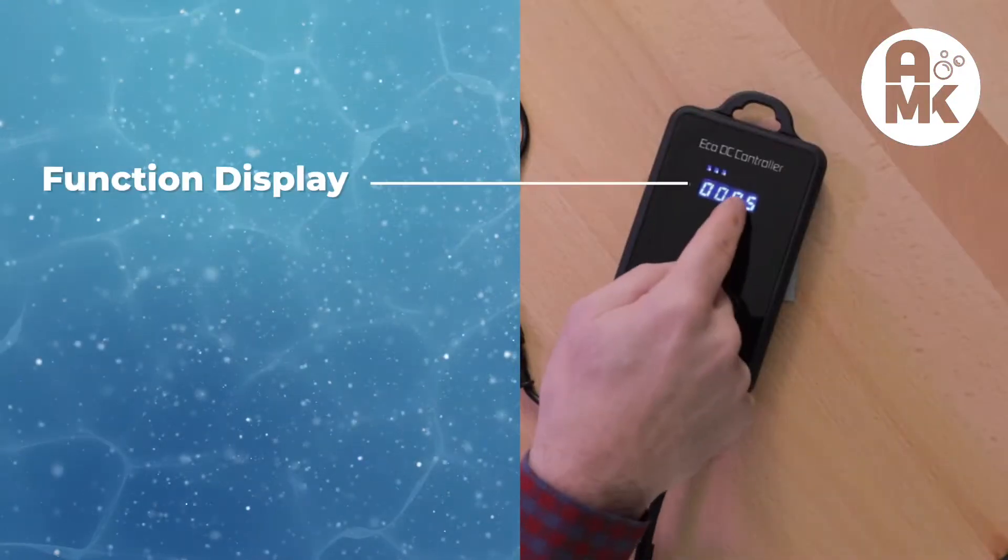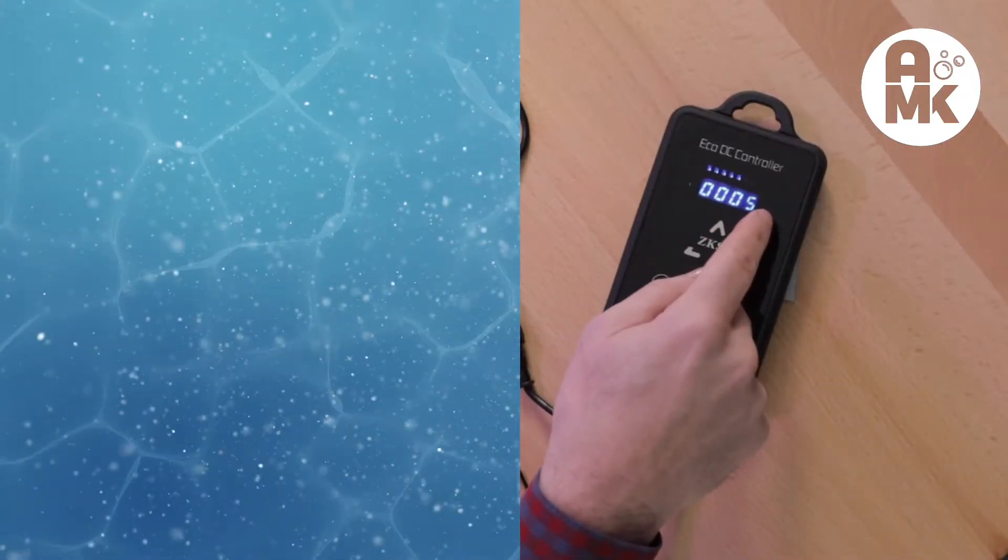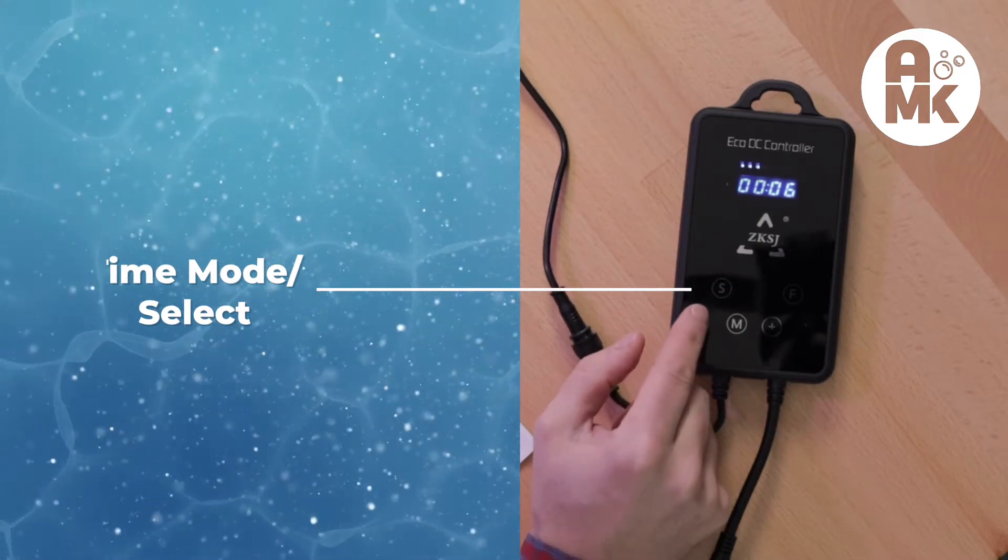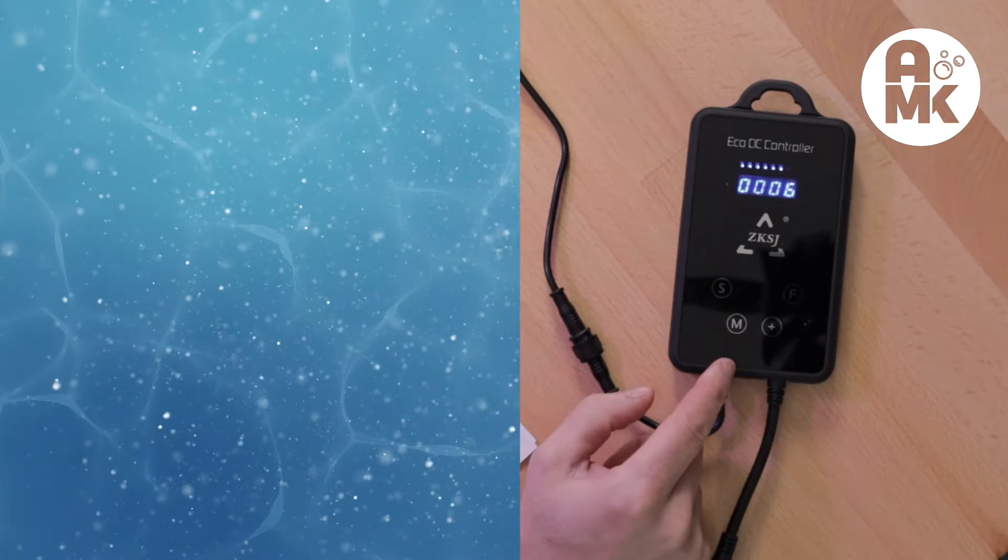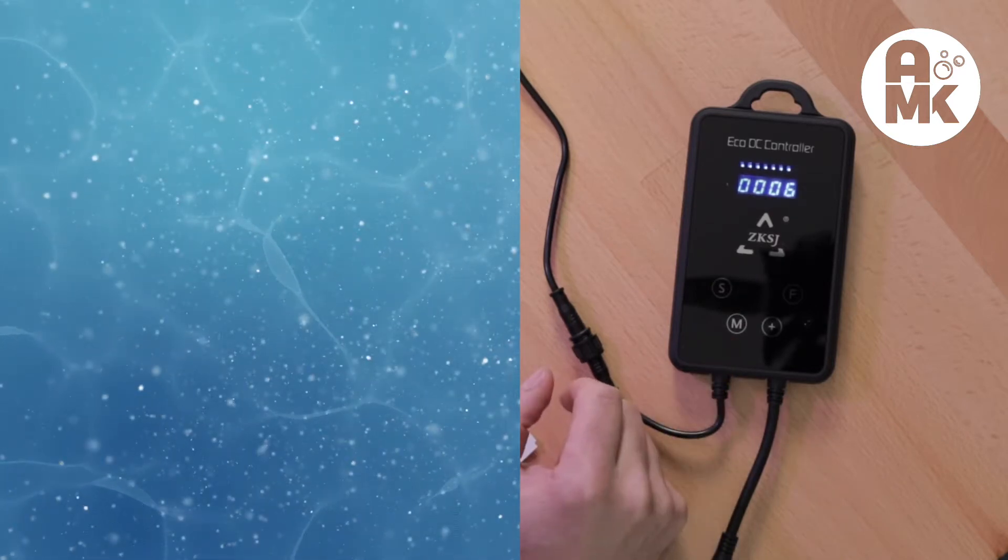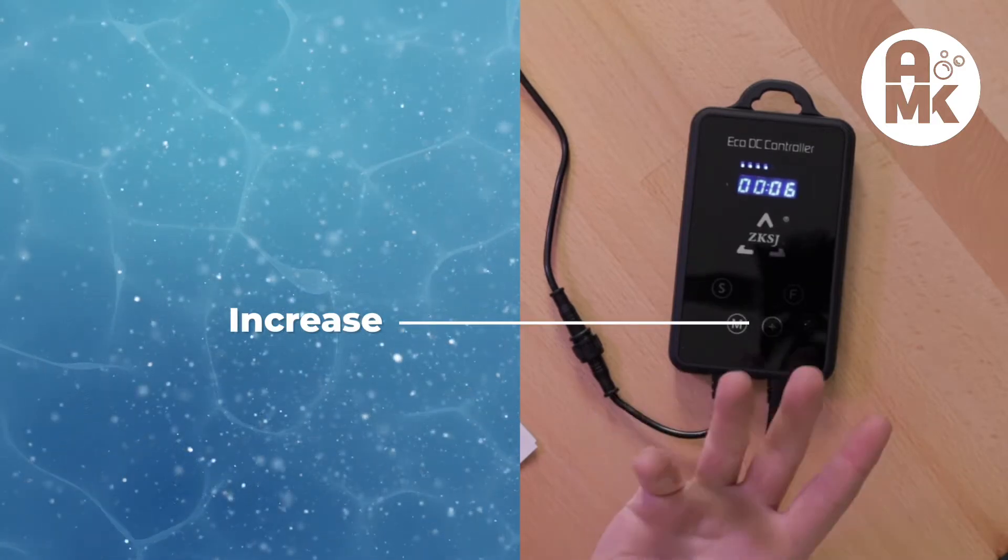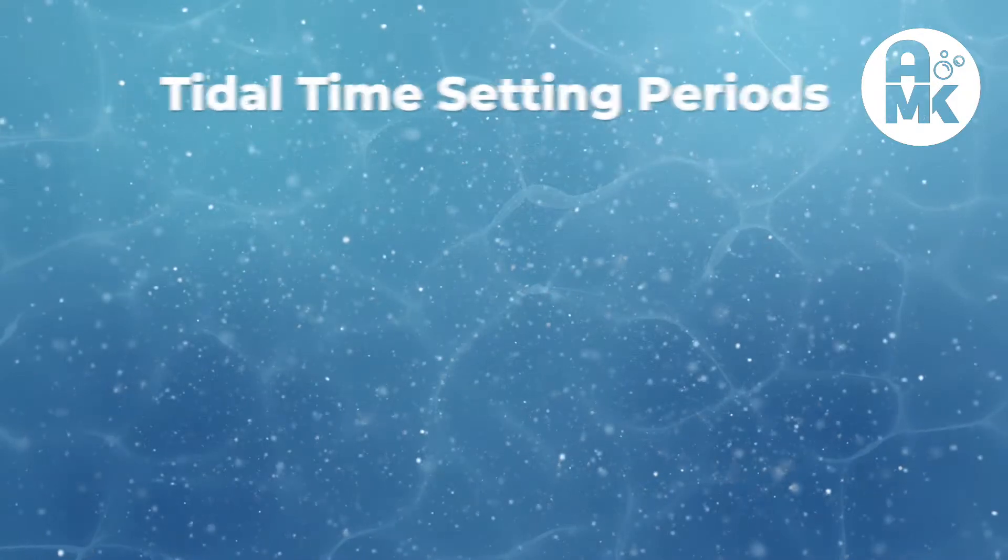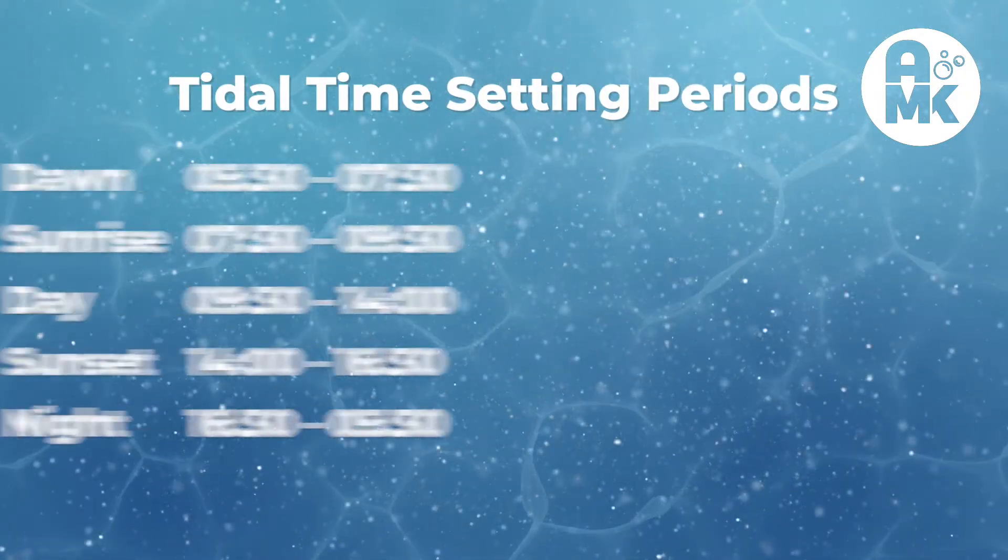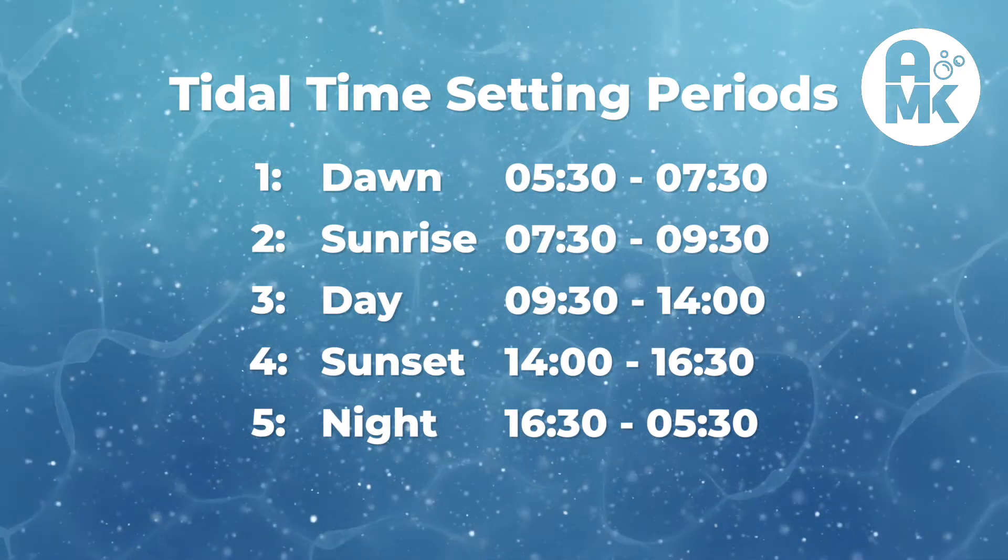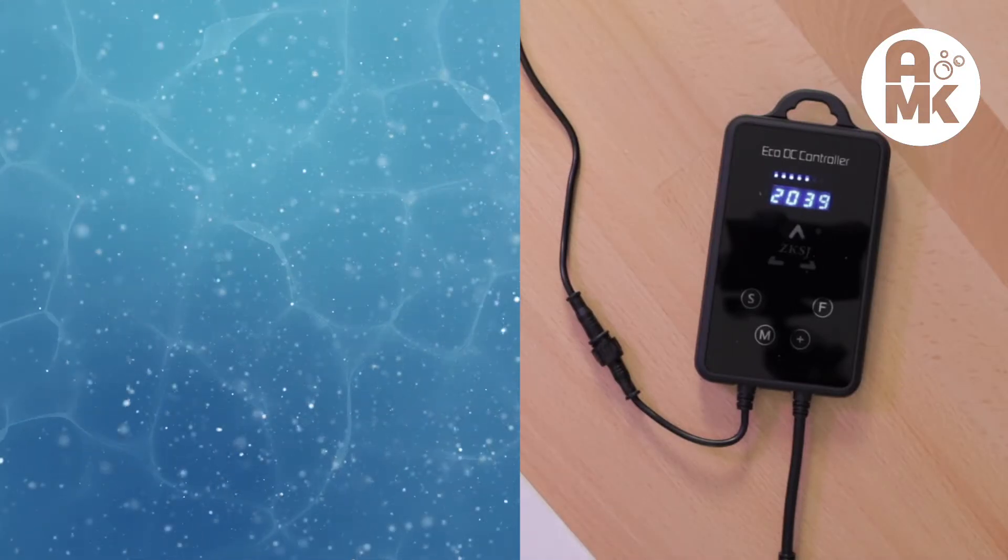So you've got function screen at the very beginning. You've got the S button is called the time mode setting slash the select button. F button is your feed button. The M button is the move button, which we'll explain in a moment. And then, of course, you've got the increase button, which is plus on the front of the display. Out of the box, the unit comes with five title time setting periods: Dawn, sunrise, day, sunset, and night. First thing you want to do is set the time because all of those are already preset. So it's the easiest way to just make it work.